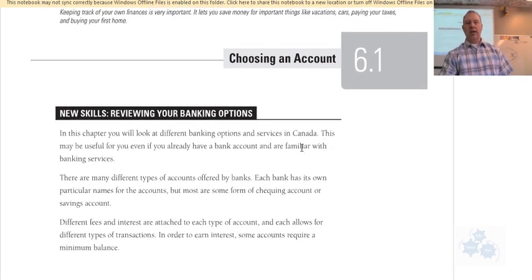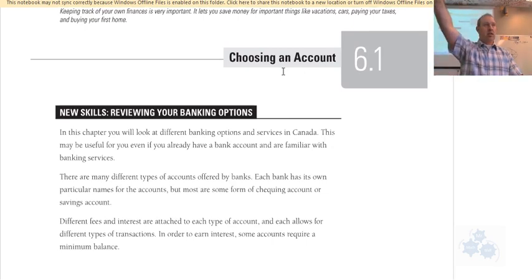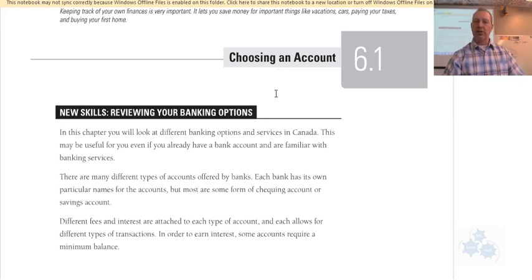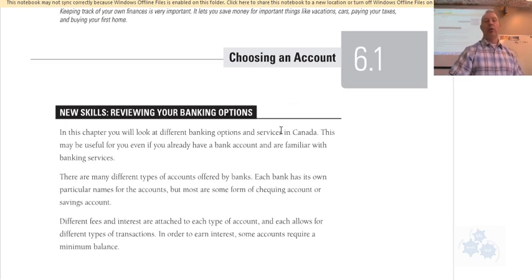The first thing we're going to talk about in 6.1 is choosing an account. How many of you have a bank account right now, a checking account? Okay, all of you — that's great. So you probably have a bank card, a debit card, maybe checks. You know a little bit about what having a bank account is like. Let's talk about different options and costs related to bank accounts — maybe you don't know all the details of your own account. Let's see what's out there.